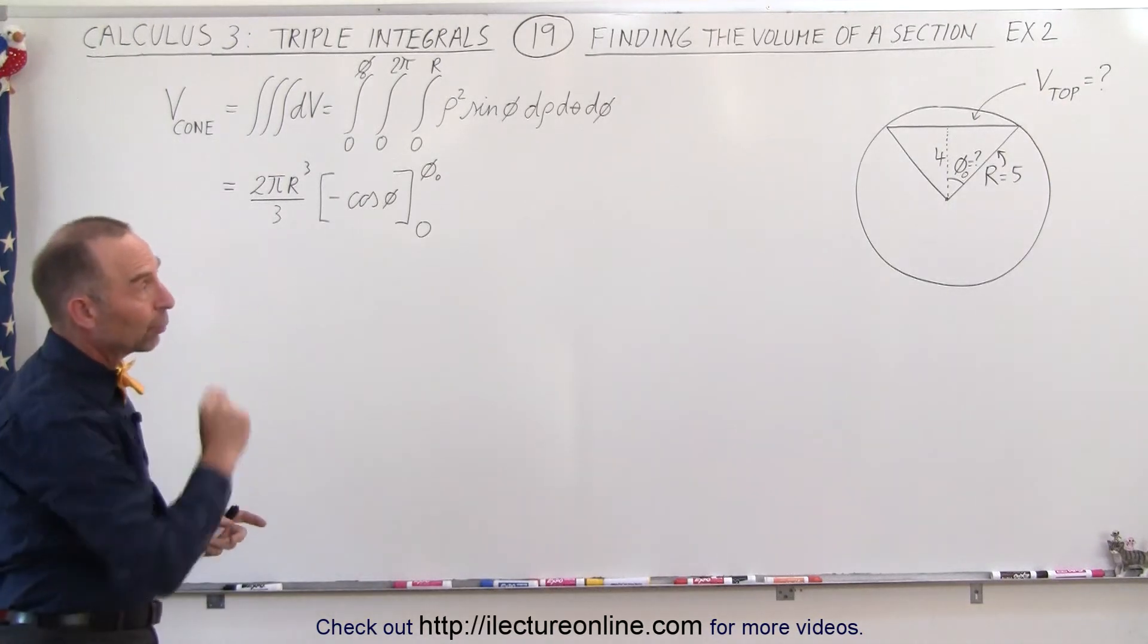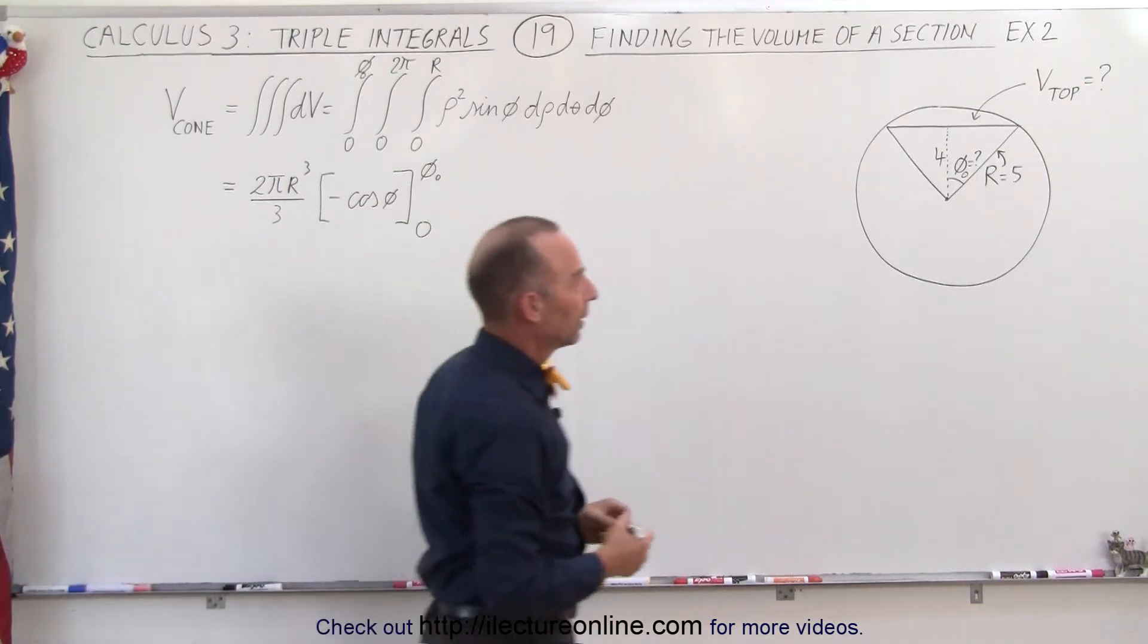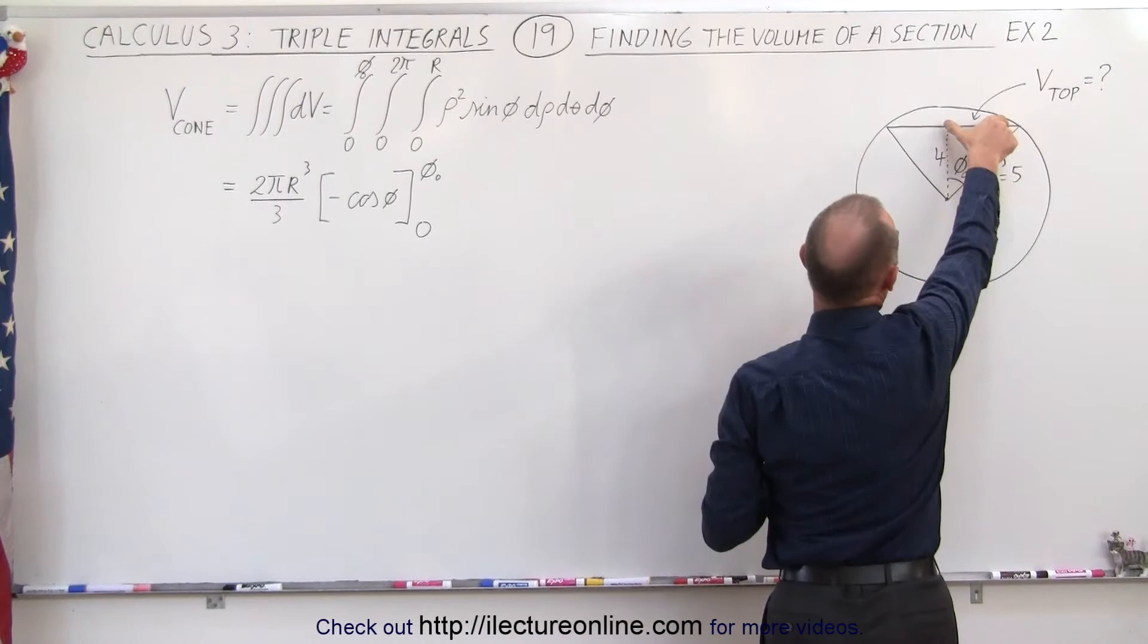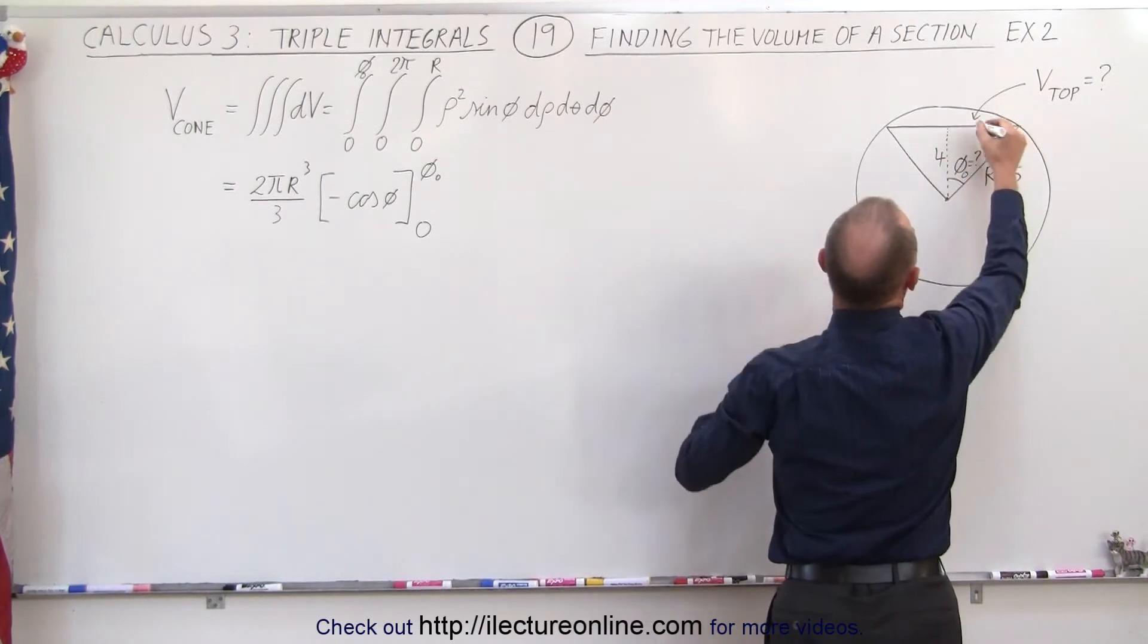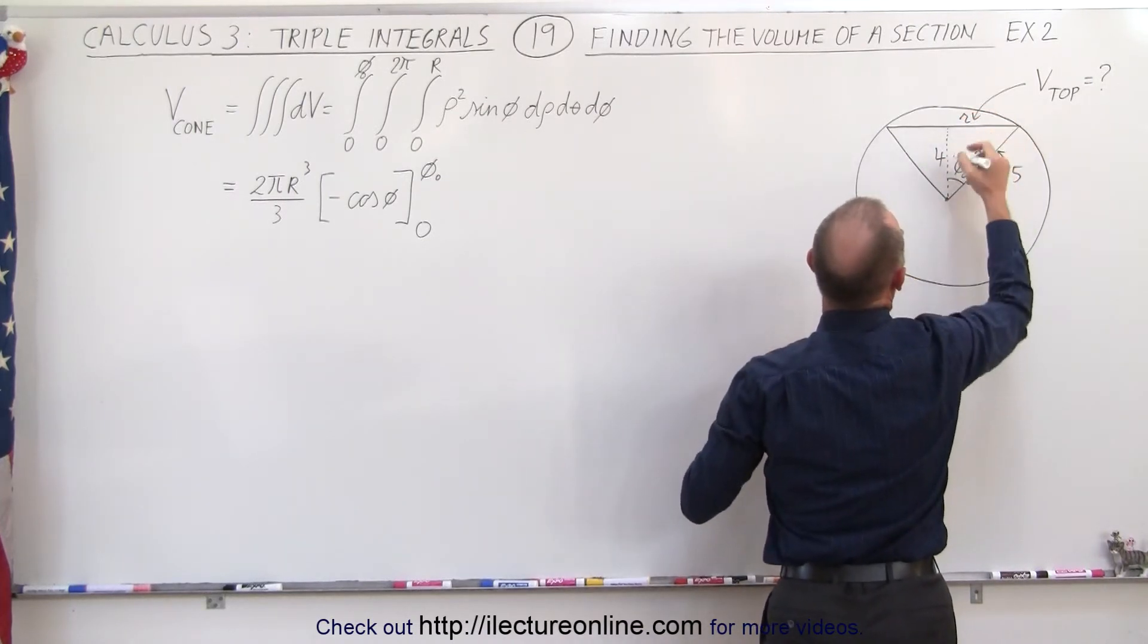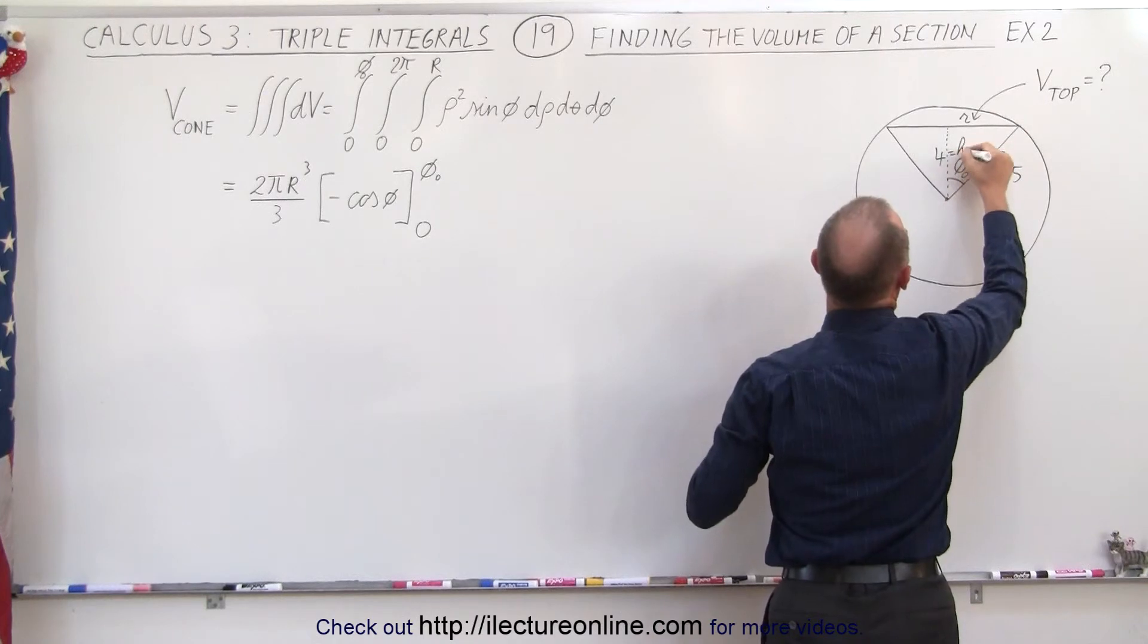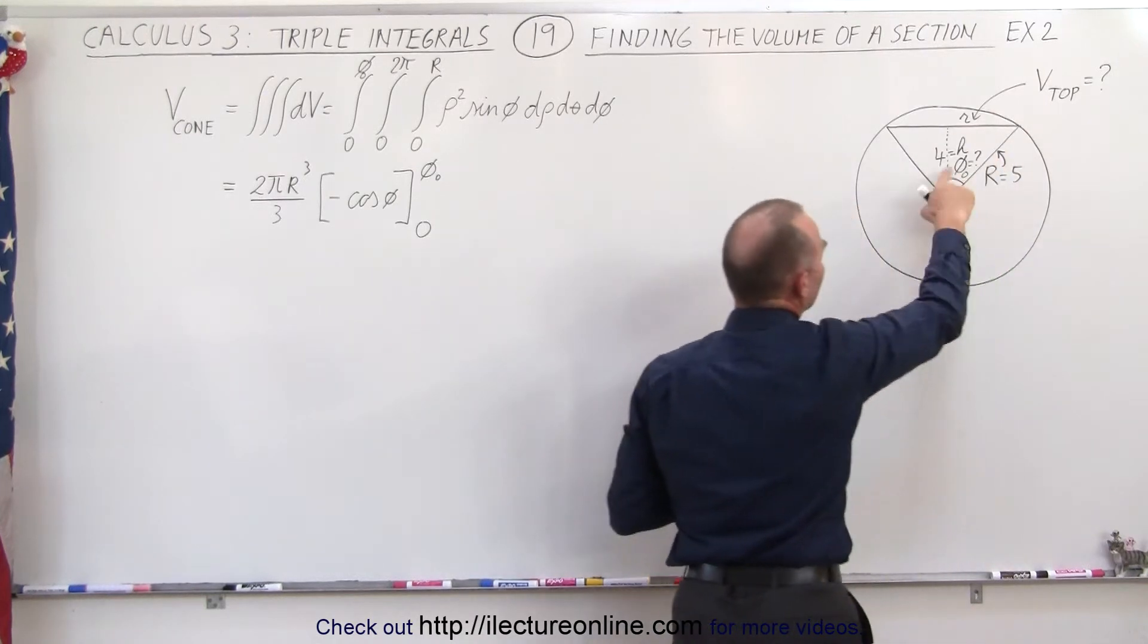So what we need to do here is figure out what that angle is equal to. If this distance right there is equal to r, we'll call that small r, and if this distance here is equal to h, distance of 4, and the angle here is φ.